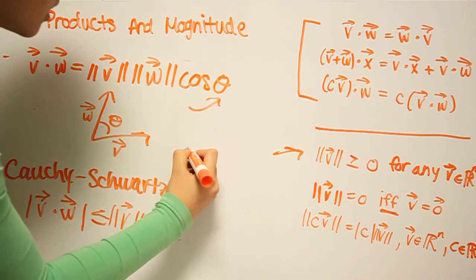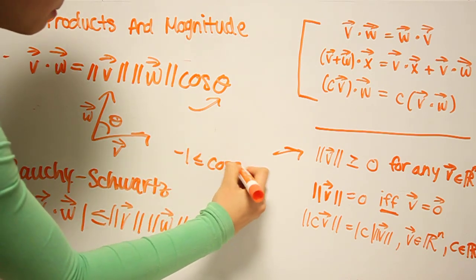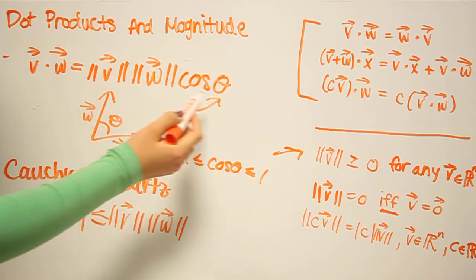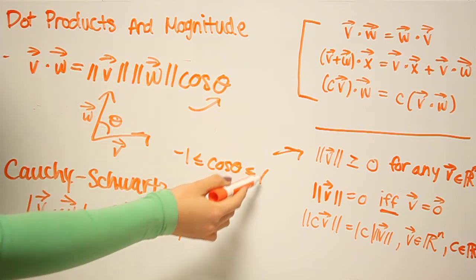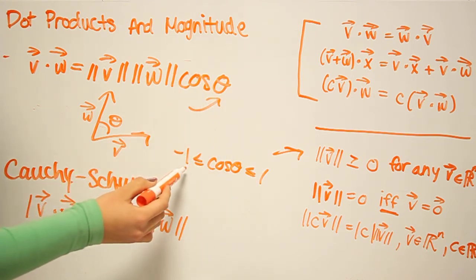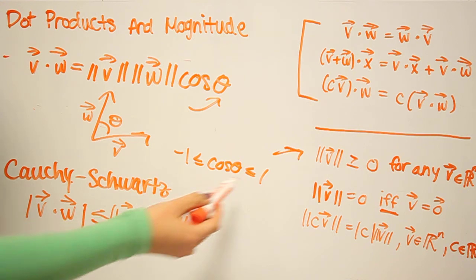cosine theta is always between 1 and negative 1. So we see that the magnitude of this will be greatest when cosine is 1. And we have the absolute values here because cosine theta can take on negative values. But we're only interested in the sheer magnitude of this.